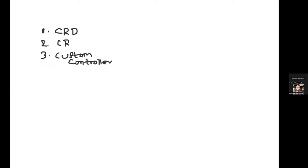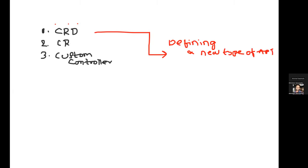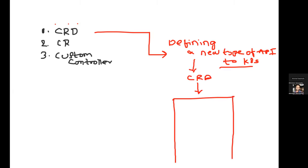CRD stands for custom resource definition — you are defining a new type of API to Kubernetes. For example, if a company called Istio wants to enhance the capability of Kubernetes, the Kubernetes people would ask Istio to create a CRD. The CRD defines a new type of Kubernetes API. You submit a custom resource definition — it's a YAML file — to Kubernetes to introduce this new API type.